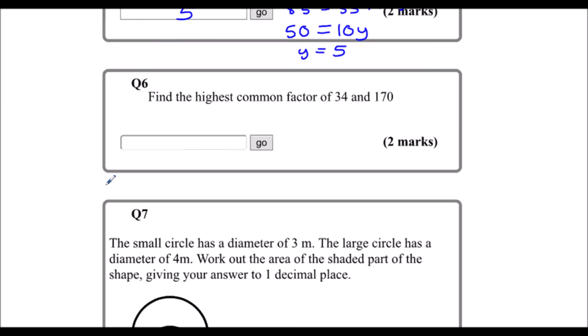Question 6. Find the highest common factor of 34 and 170. I can do factor trees for this. I'll do 34 over here. 34 is 2 times 17. And 2 and 17 are both prime numbers, so there's nothing more I can do with that. And 170 is, I'll do 17 times 10. 17 is prime. And 10 is 2 times 5. So the highest common factor is, well, the common factors, they've both got a 2, and they've both got a 17.